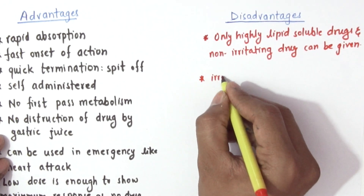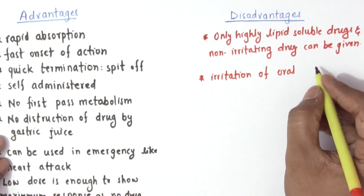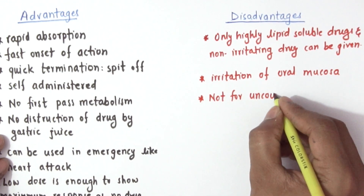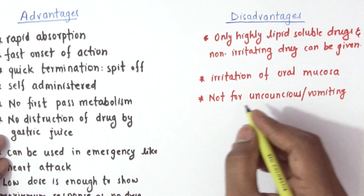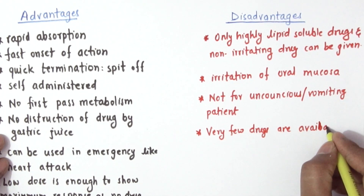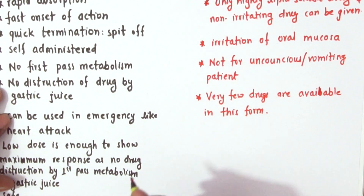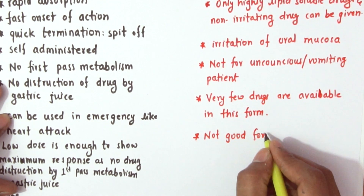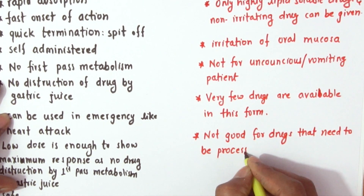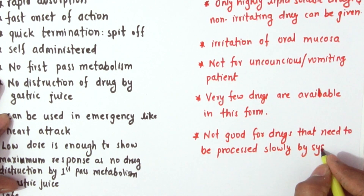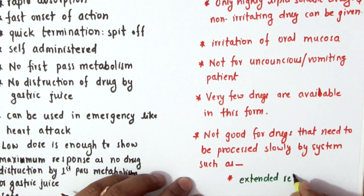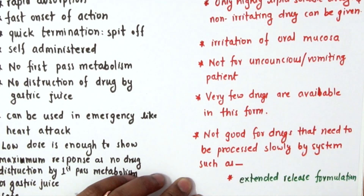Disadvantages of sublingual and buccal routes: only highly lipid-soluble and non-irritating drugs can be given. There will be irritation of oral mucosa. It is not suitable for unconscious or vomiting patients. Very few drugs are available in this form. It is not good for drugs that need to be processed slowly by the system, such as extended-release formulations.